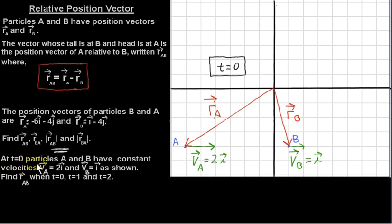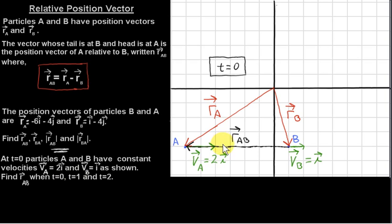At T equals 0, particles A and B have constant velocities: VA equals 2I and VB equals I, as shown. So here's the situation at T equals 0 — we have the same position vectors as before, but now we have velocity vectors. We want to find RAB at T equals 0, T equals 1, and T equals 2. At T equals 0, we've already calculated that RAB is minus 7I.